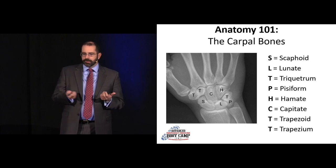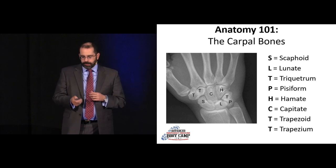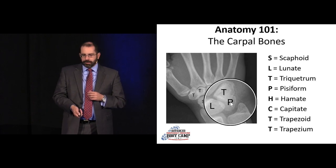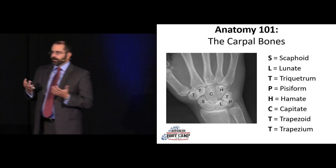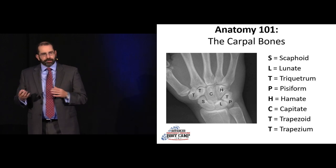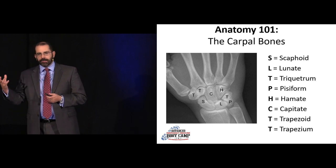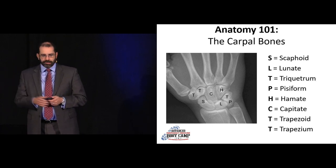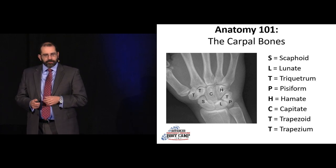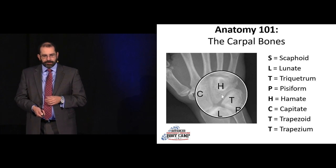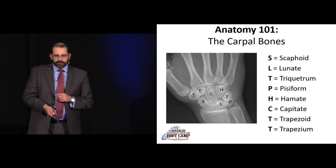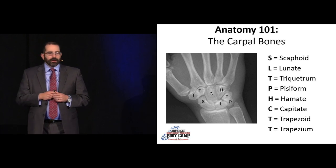In terms of the carpal bones: there's the scaphoid, the lunate, the triquetrum — which people tend to stumble over — and then the pisiform, which has the most variable positioning out of all the carpal bones. It sits outside the intrinsic carpal rows, so it can have a variable location. Then we have the hamate — that little C-shaped structure is the hook of the hamate — and then the capitate.